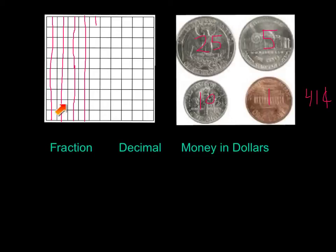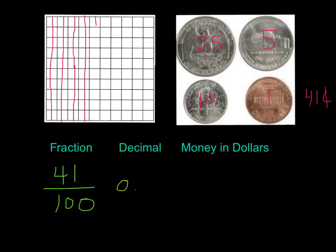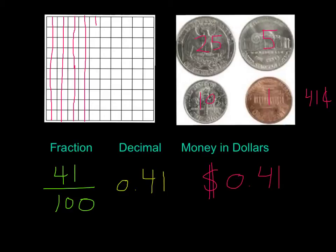If you notice, we have a hundred squares here and forty-one of them are shaded in. So our fraction is going to be forty-one one-hundredths. Our decimal is going to be zero dollars — we have a four in the tenths place and a one in the hundredths place, which gives us zero point four one. Our money amount is dollar sign zero point four one, for forty-one cents.